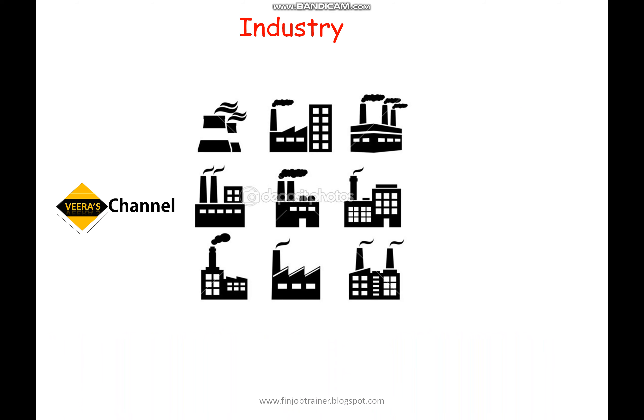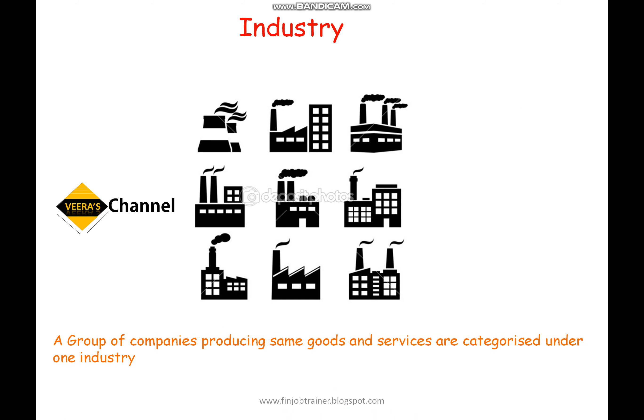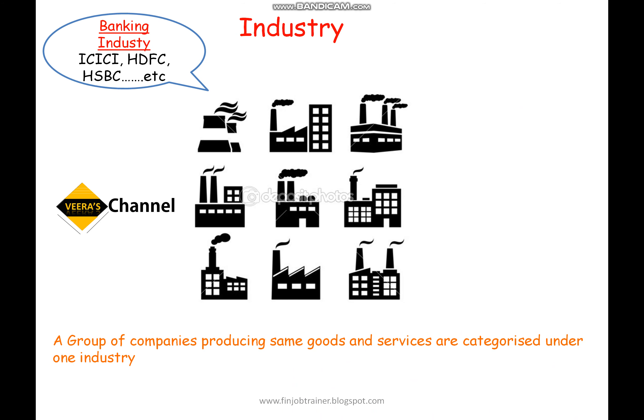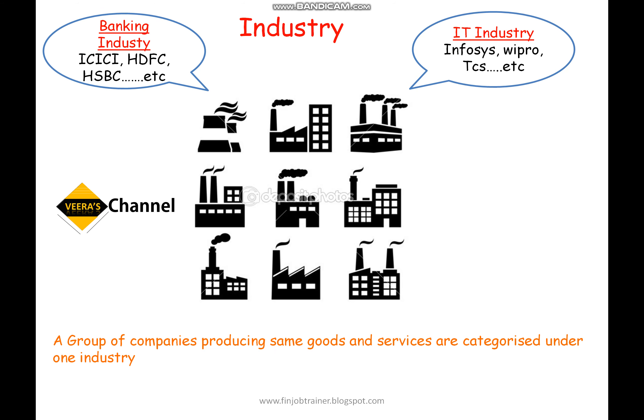Before knowing what a stock index is, let us understand what an industry is. An industry is a group of companies producing the same goods and services, categorized under one industry. For example, the banking industry includes companies like ICICI bank, HDFC bank, and HSBC bank. The information technology industry includes Infosys, Wipro, and TCS. The infrastructure industry includes companies like L&T and GMR.